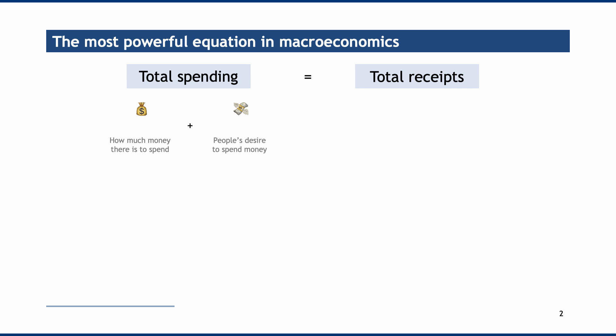Because total spending equals total receipts, we can link this to the right-hand side of our equation. This shopping trolley represents the nominal value of goods and services being exchanged — like the receipt you get from a supermarket telling you how much you've paid. Total spending must be equal to total receipts, but we can split this nominal value even further.